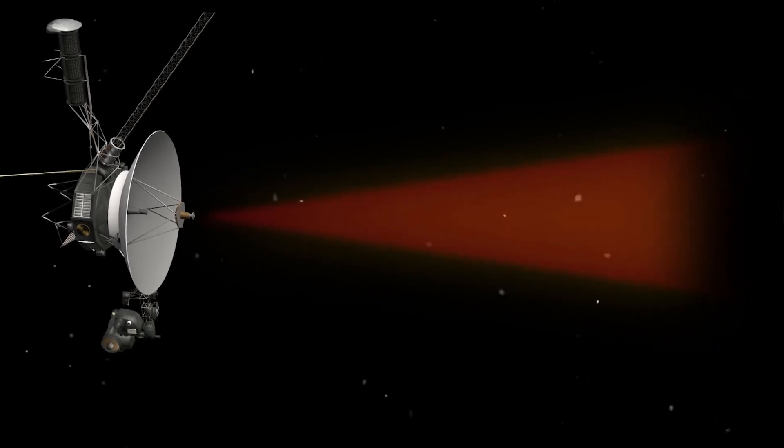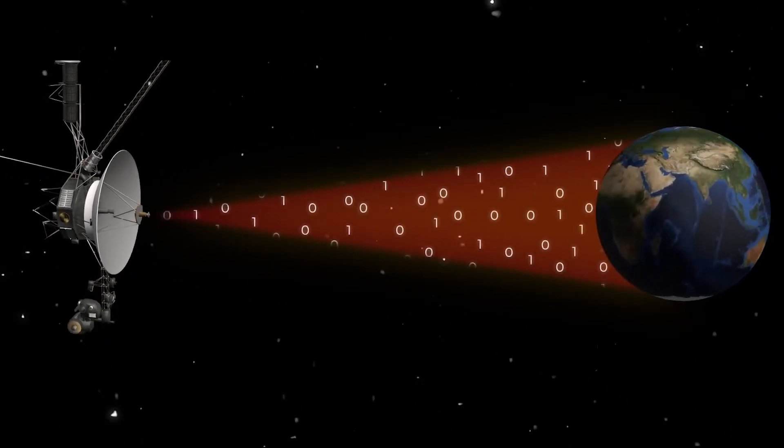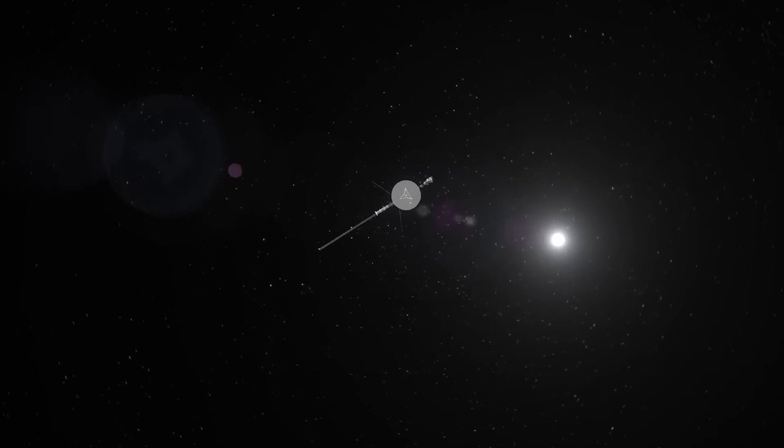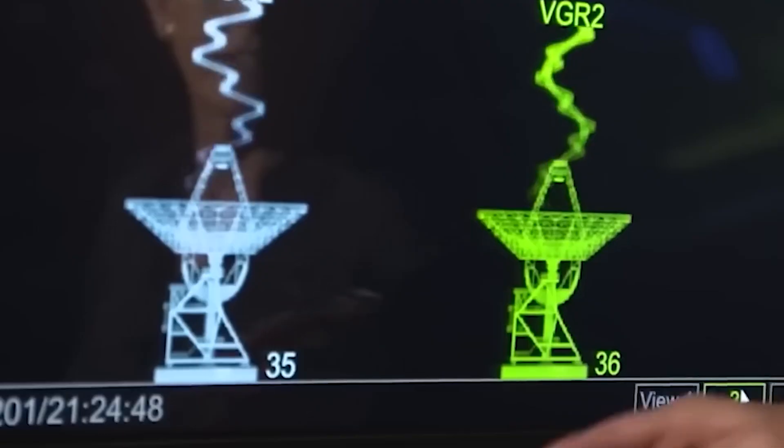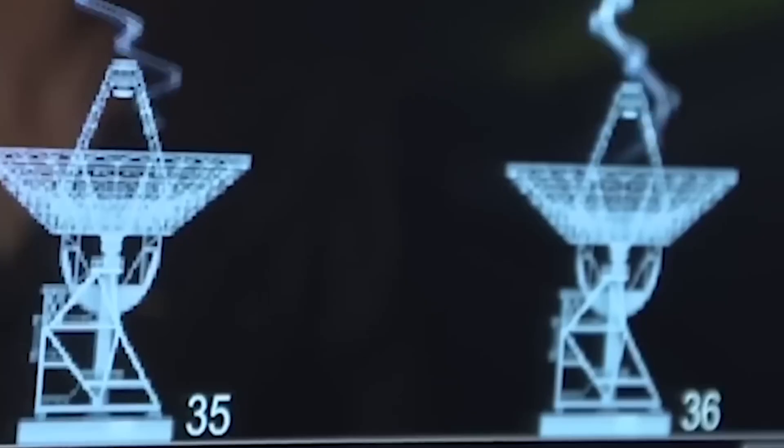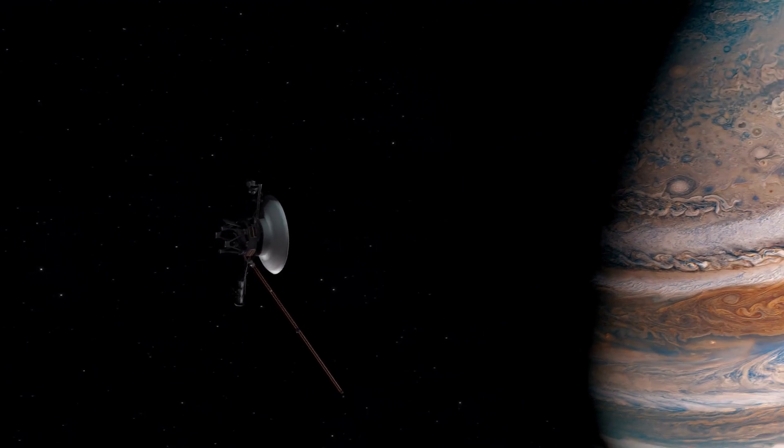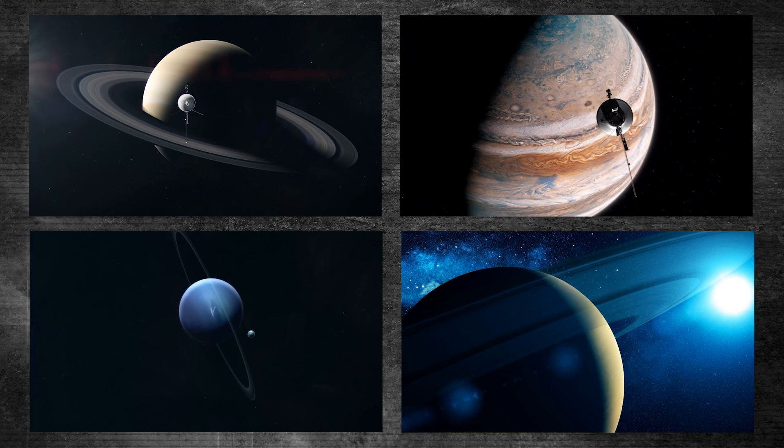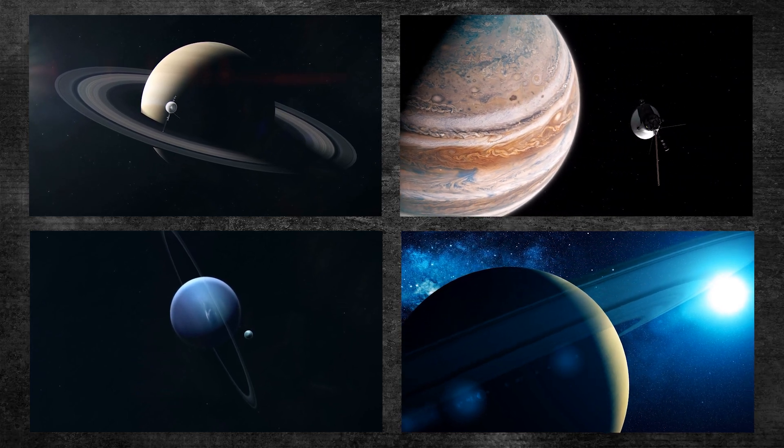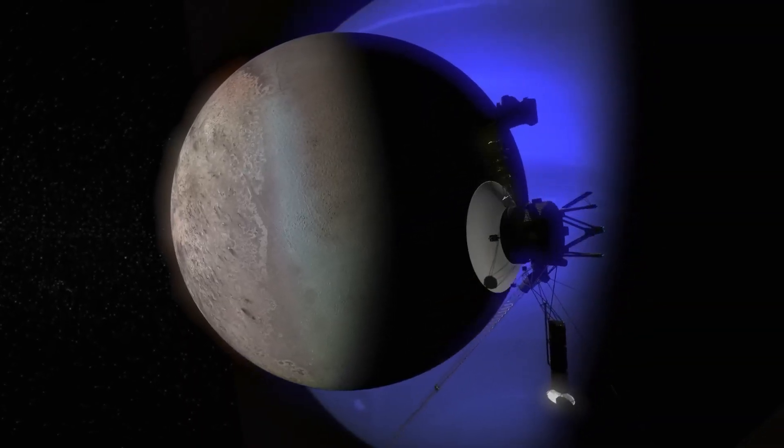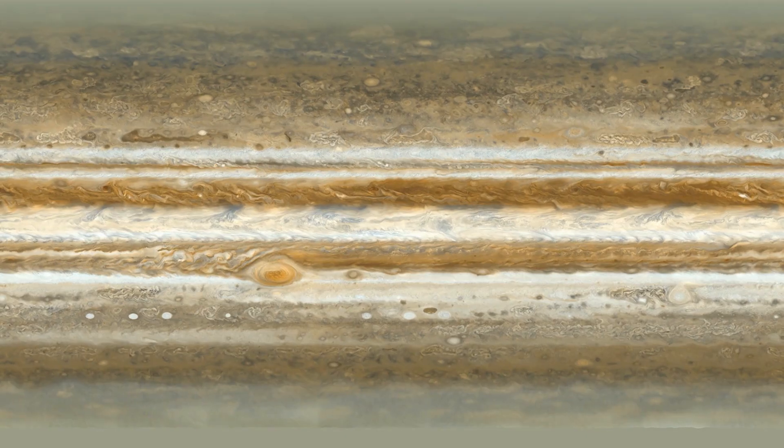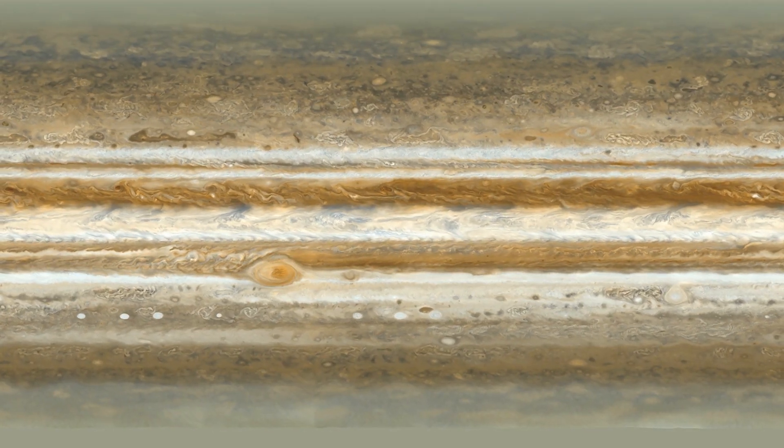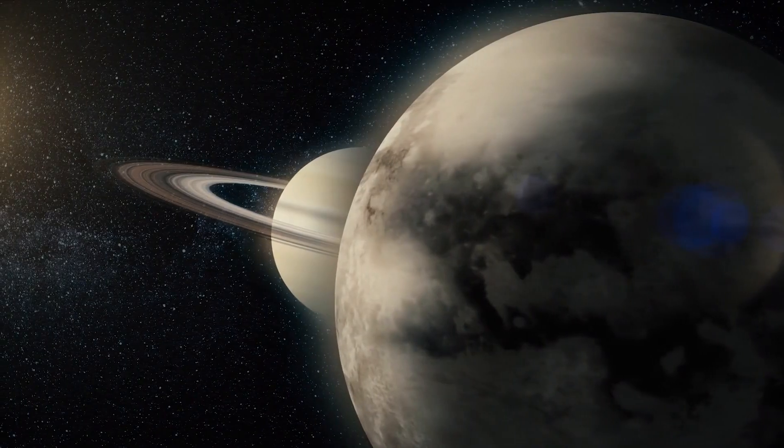This was important because it takes hours for signals to travel between Earth and the Voyagers, so the spacecraft had to be able to solve problems and do their tasks on their own. Before these missions, our view of planets like Jupiter, Saturn, Uranus, and Neptune was limited to what telescopes could show us. The Voyager probes gave us the first close-up look at these giant planets, revealing the details of their swirling atmospheres, massive storms, and moons like never before.